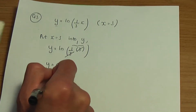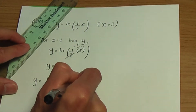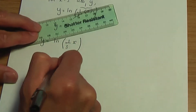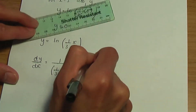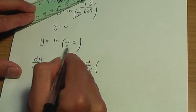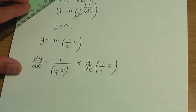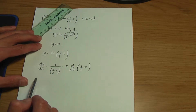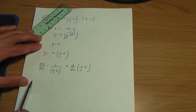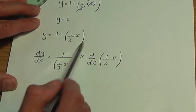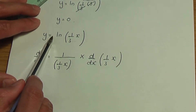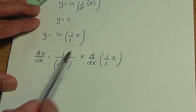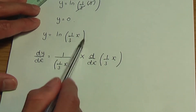We have the equation of the curve y equals ln of 1 over 3x. dy over dx is the gradient function. When we differentiate ln, it's 1 over (1 over 3x), multiplied by the derivative of the argument 1 over 3x. To differentiate a natural logarithmic function, you take 1 over the argument and multiply by the derivative of that argument.